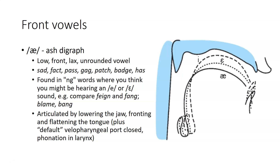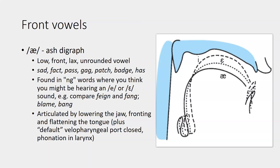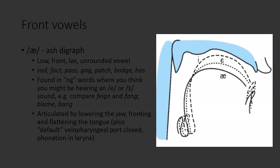A is articulated by lowering the jaw and fronting and flattening the tongue, plus the usual closure of the nasal passage and phonation. In this image, we have a range of front vowels from E to I to A, showing their basically fronted tongue position with a relatively open pharynx, but differences in tongue height — and that difference is caused by both tongue and jaw articulation, as you can see from the differences in lower lip position.